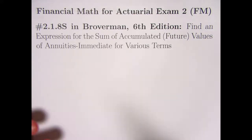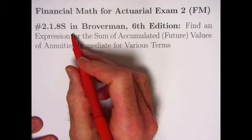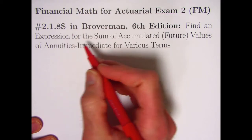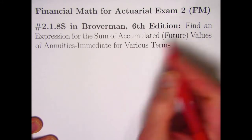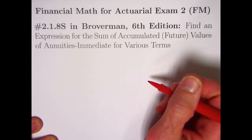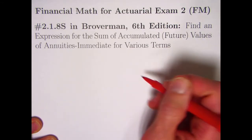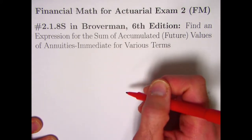In this video we're going to be taking a look at problem 2.1.8S, an old actuarial exam problem in the sixth edition of Broverman. Find an expression for the sum of accumulated or future values of annuities immediate for various terms.